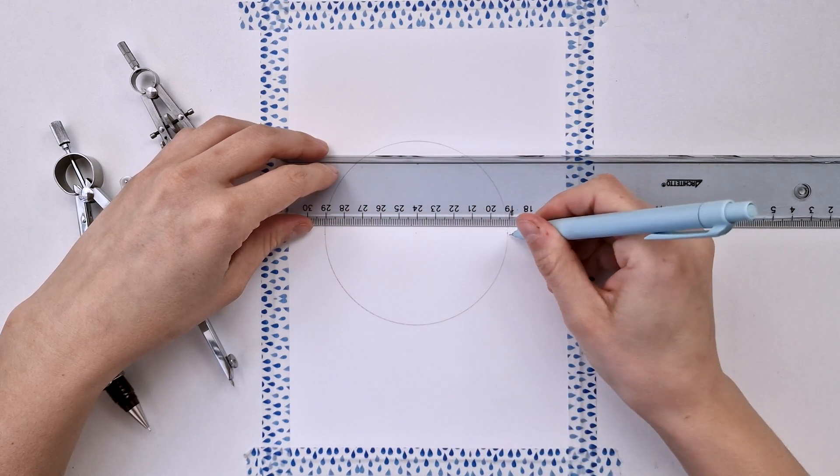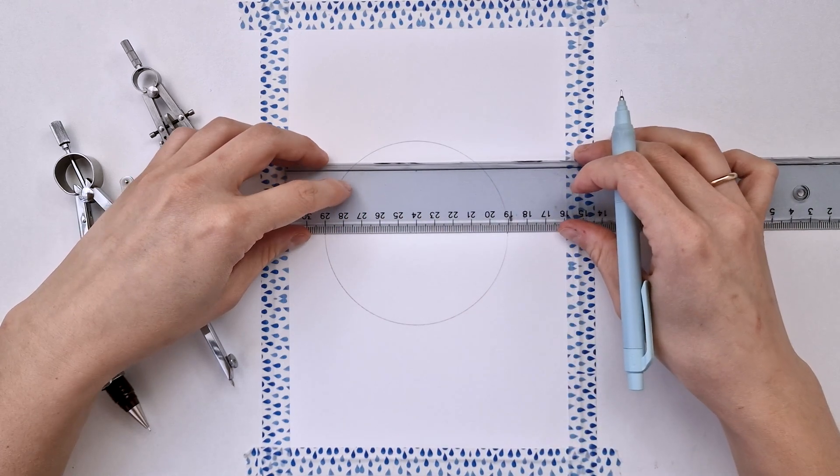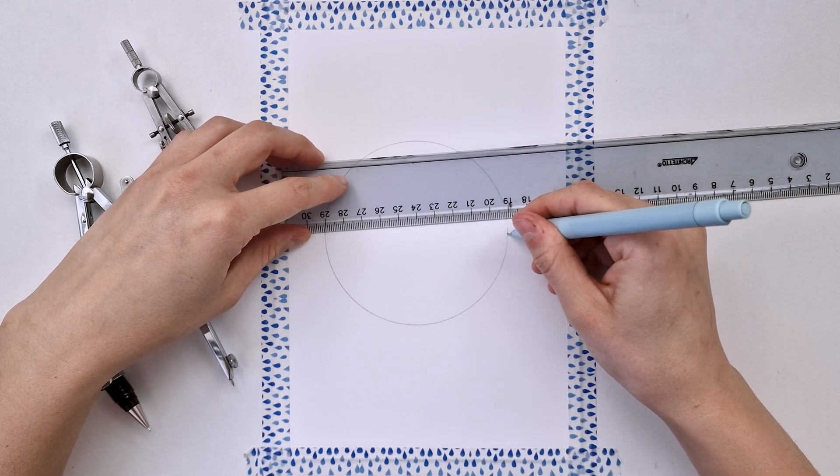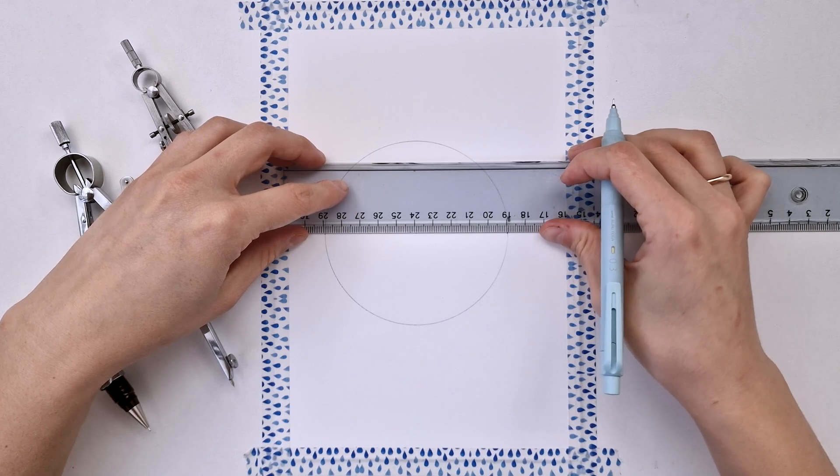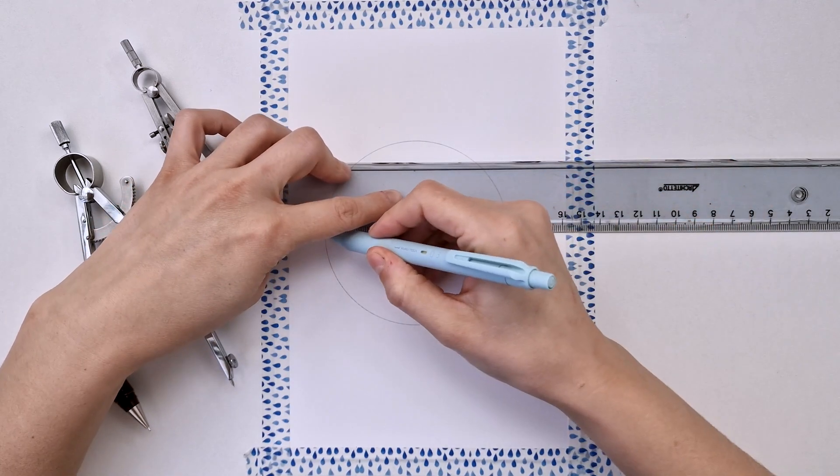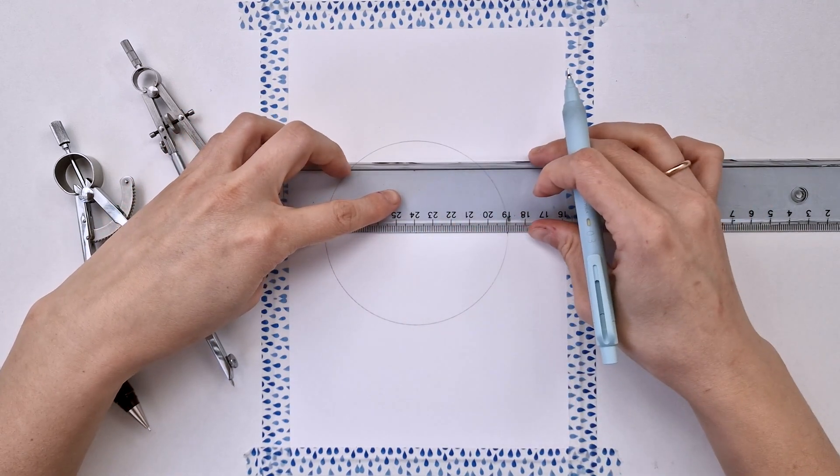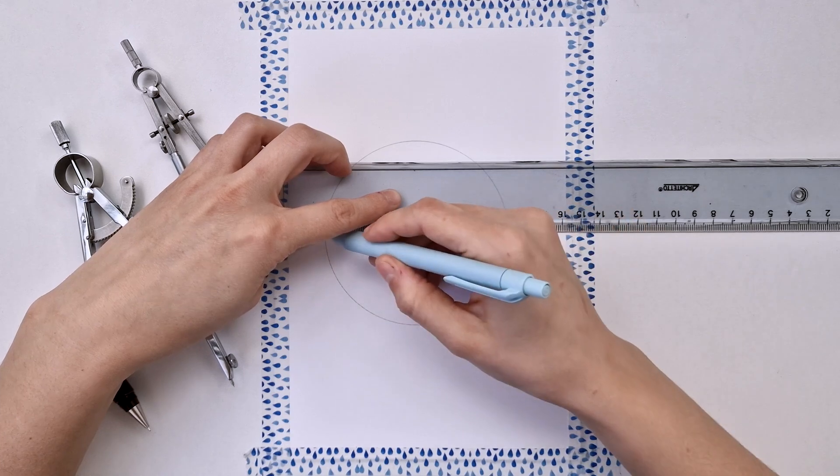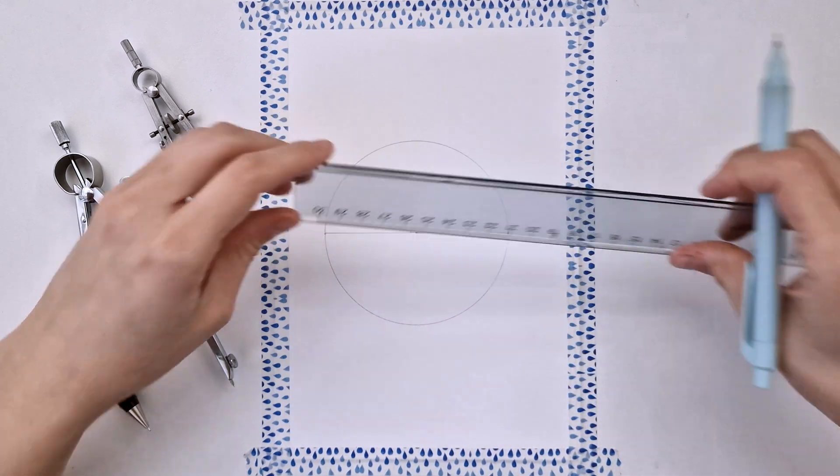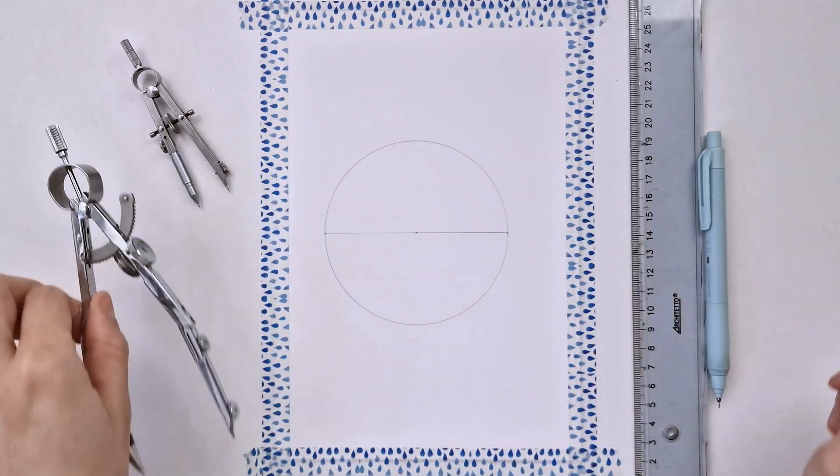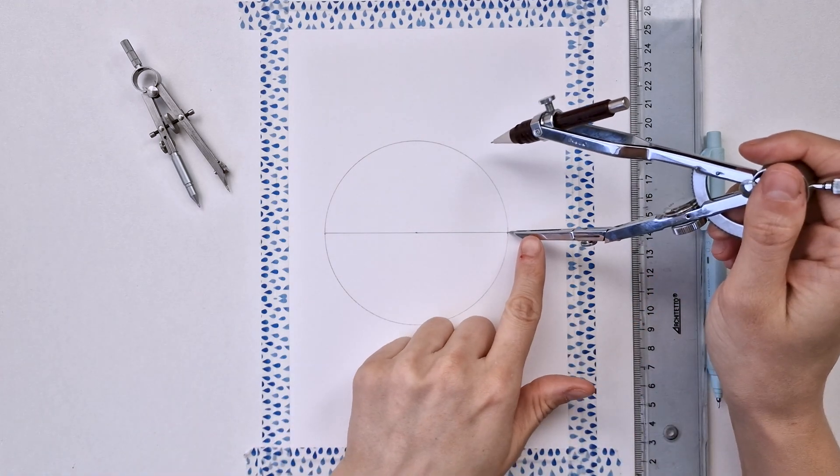I'm going to draw my horizontal line. Make sure that your line is passing through the center. You can eyeball it, you can measure the distance from the perimeter of the page, whatever you prefer. Next, I'm taking my...